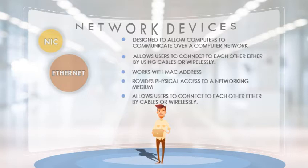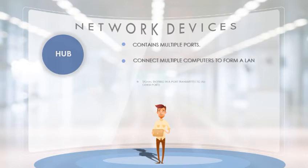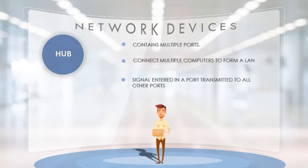A NIC or network interface card works with the MAC address to uniquely identify each computer. It provides physical access to a networking medium, allowing a physical connection to the network. That is the purpose of the ethernet card or network interface card. A hub is a device which contains multiple ports and is most used in packet switching technology.